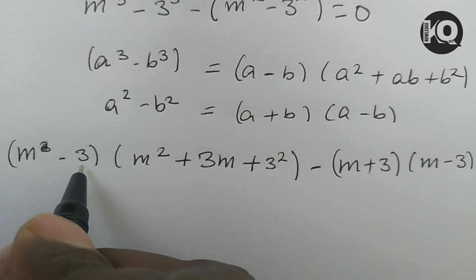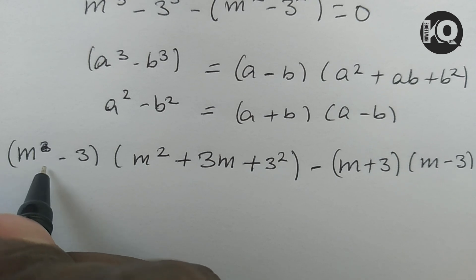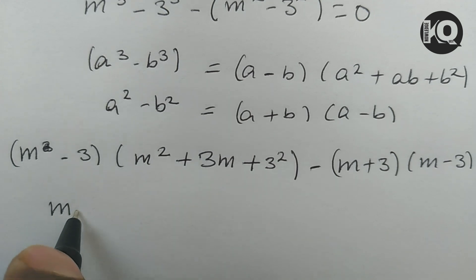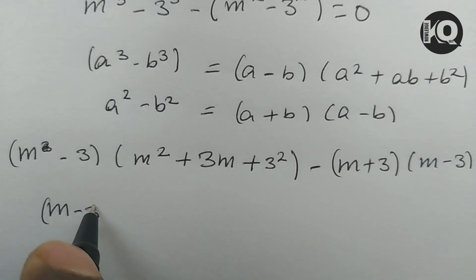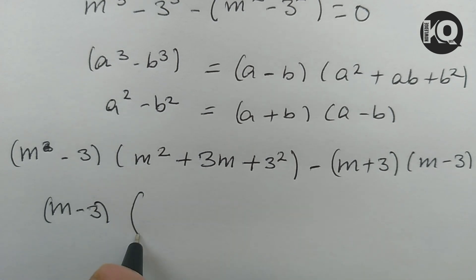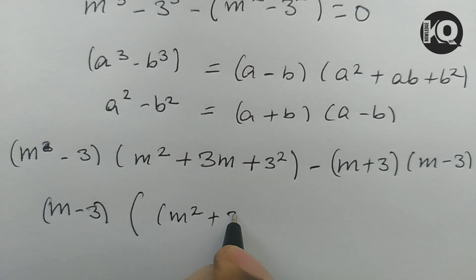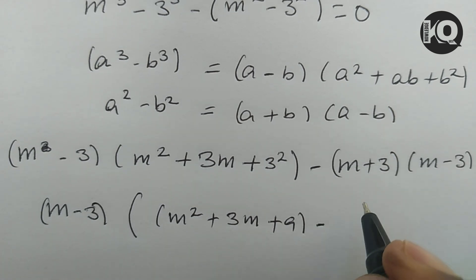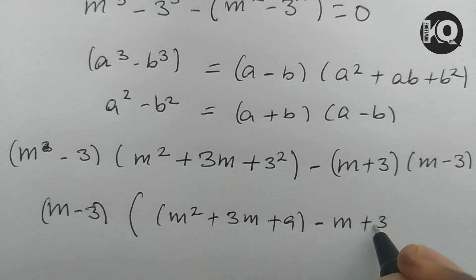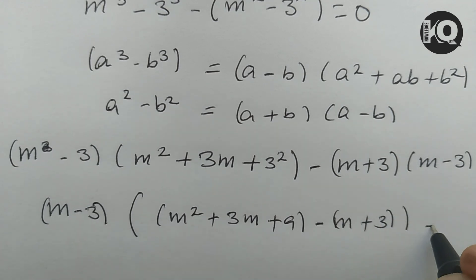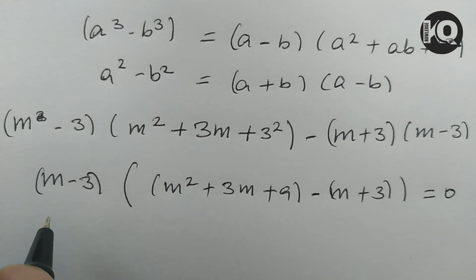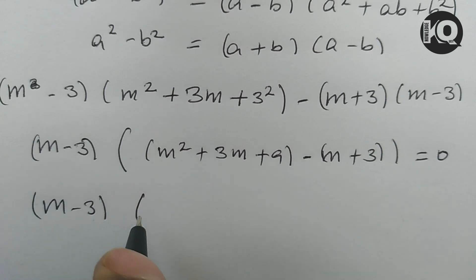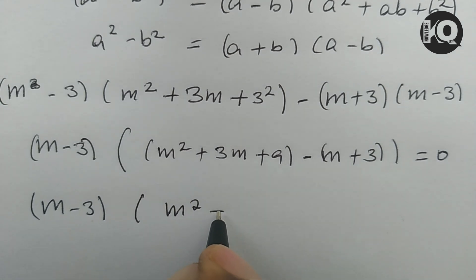We can factor out (m minus 3) since it appears in both terms. Factoring gives (m minus 3) times [(m squared plus 3m plus 9) minus (m plus 3)] equals 0.